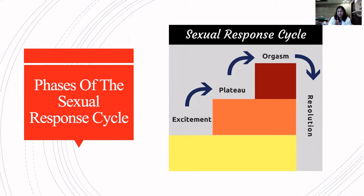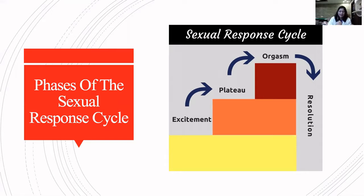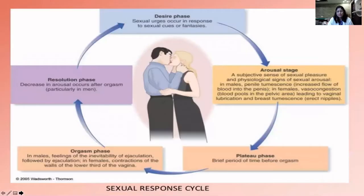And then the resolution happens. It was very simple — it was a linear model, going up, up, up. It did not explain a lot of things, and people definitely wanted to add their own names and bring in something better. So they tried to improve on the Masters and Johnson's model.